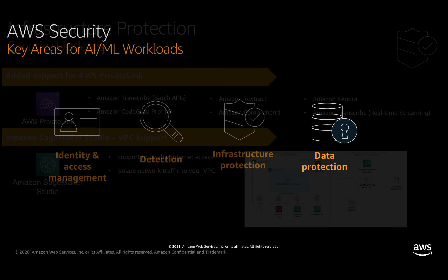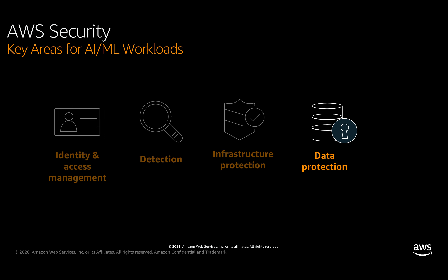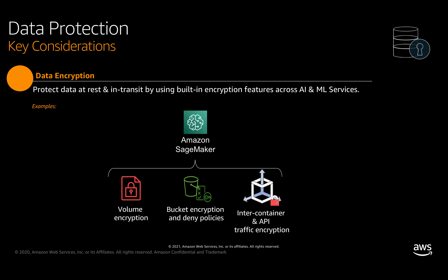Let's now wrap up with data protection. Data protection is a key security consideration that typically includes data classification and encryption for data in transit as well as at rest. Both AI and ML services offer built-in encryption capabilities either by default or through simple configurations. For Amazon SageMaker, by default all inter-container traffic and API traffic is encrypted in transit. SageMaker also offers the ability to configure encryption for storage attached to compute, including notebooks, processing jobs, training jobs, and hosted endpoints. S3 also offers built-in capabilities to easily configure encryption for data at rest.